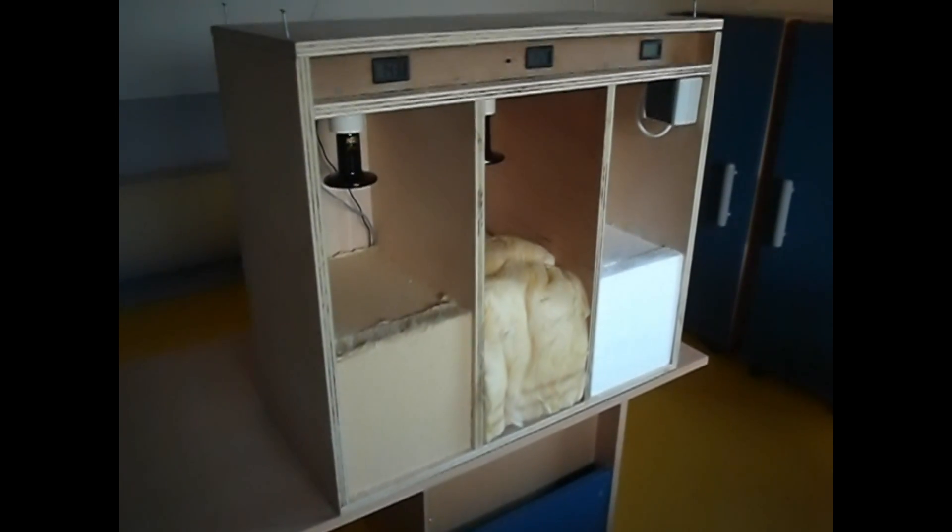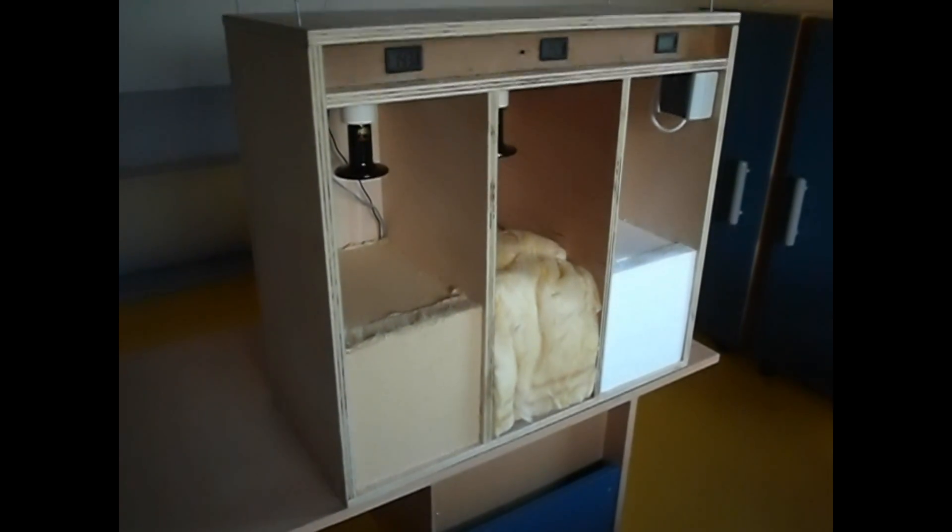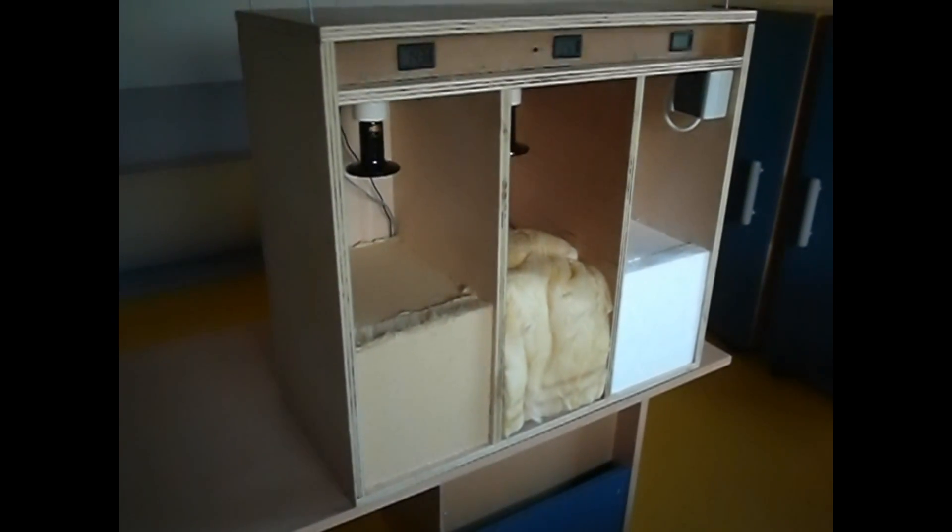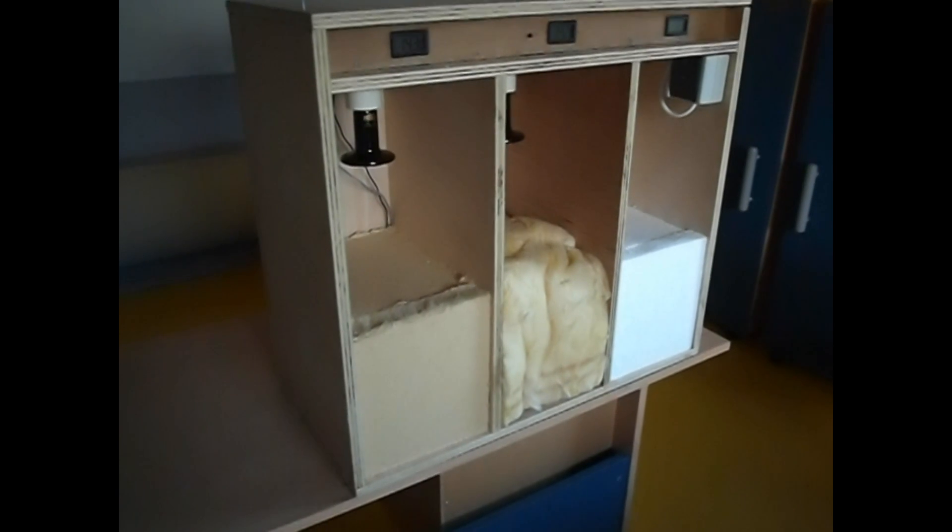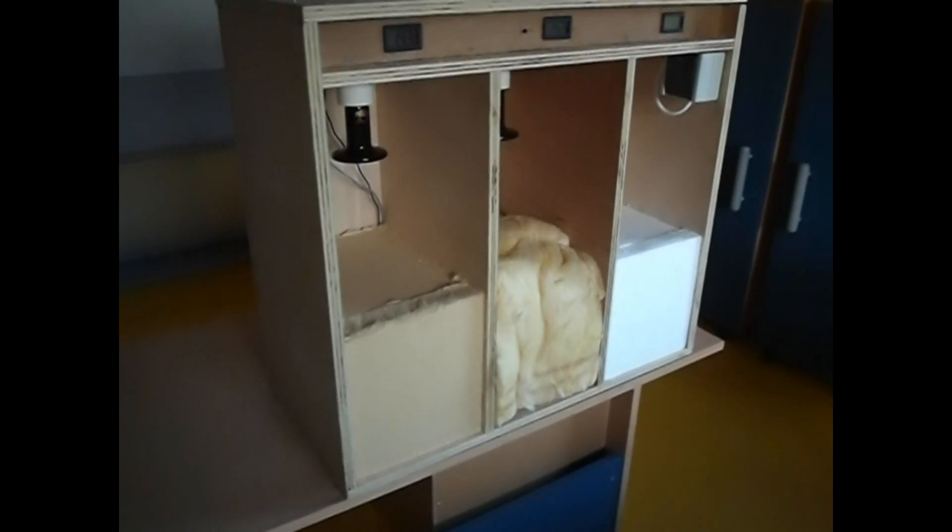So this is our test box. In this box we have built three sort of mini houses. On the left we have a house with wood fiber insulation, in the middle we use glass wool, and on the right we use polyurethane.